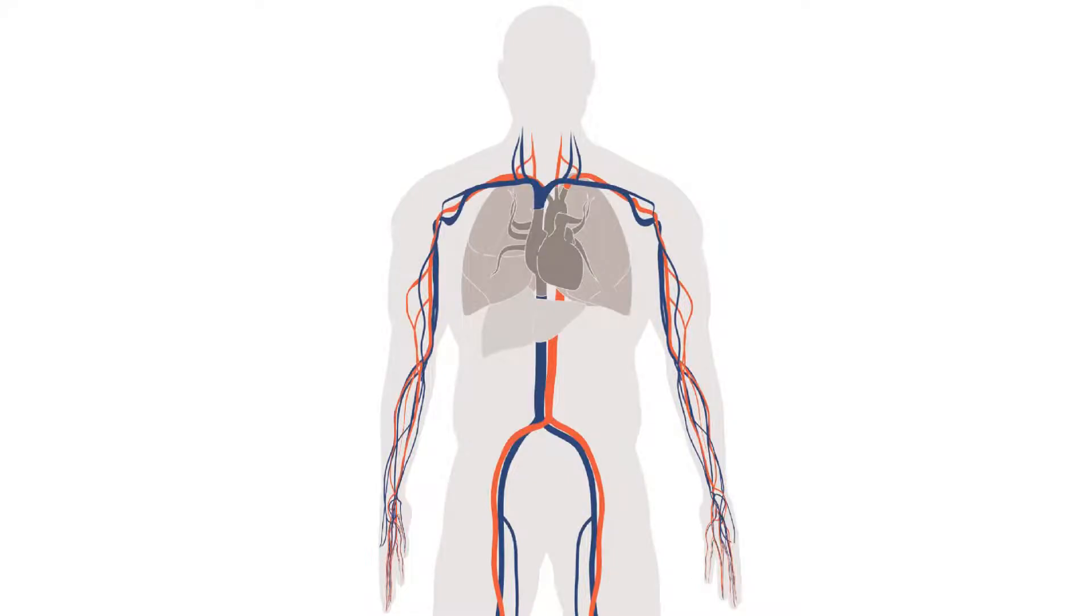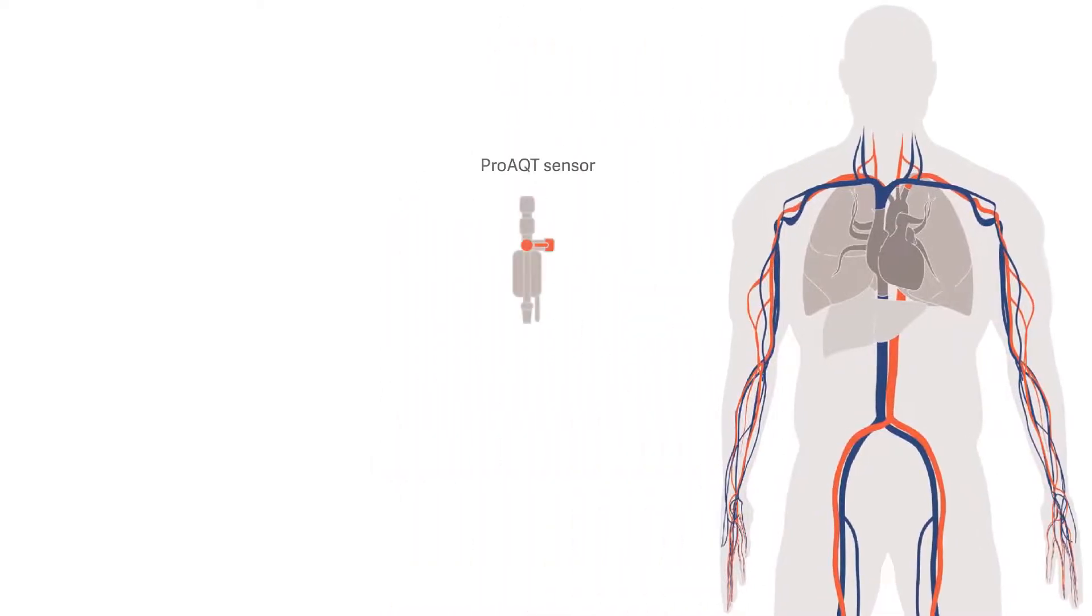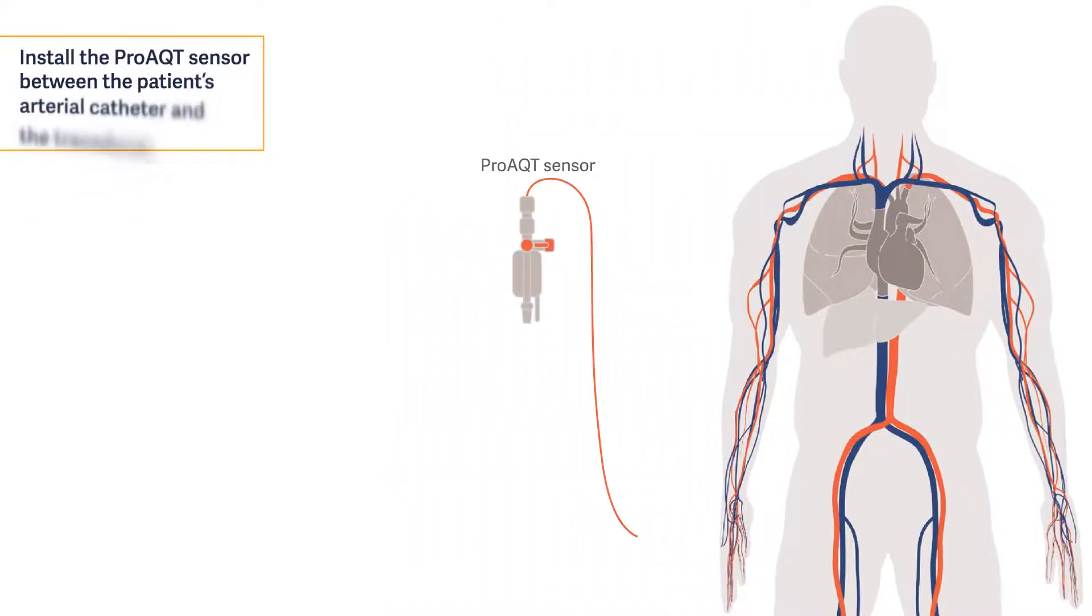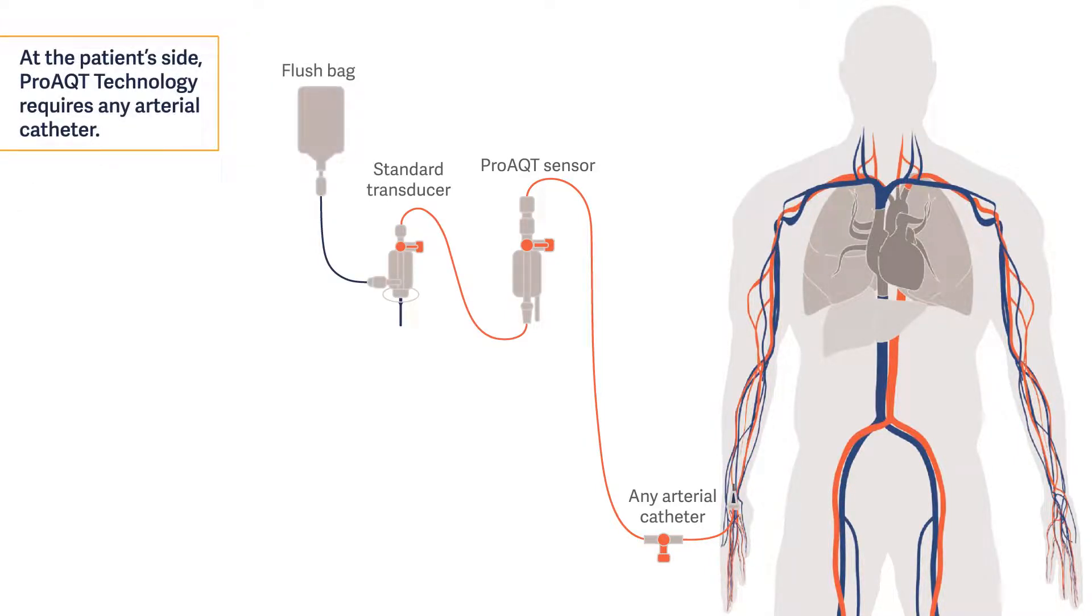To use Proact Technology, properly set up its equipment. To set up the Proact sensor, install it between the arterial catheter and the transducer. It can be any arterial catheter.